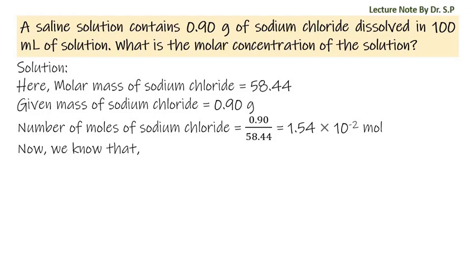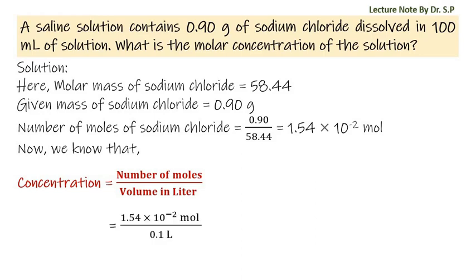Now we know that concentration equals number of moles divided by volume in liters. That equals 1.54 × 10^-2 moles divided by 0.1 L. Here, 100 mL equals 0.1 L.